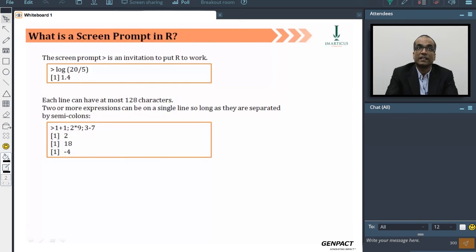When you see on the screen a prompt like the greater than sign, usually you won't see this on the script window. This would be seen only in the console window. So if you see a prompt sign with the greater than, that means R is asking you to give an input. That's where you will write your codes. When you say log of 20 by 5, it indicates that you are asking R to execute log of 20 by 5. Log means log to the base e—that's a natural logarithm, not the log to the base 10, not log to the base 2. So that's the value 1.4 as you can see on the screen.